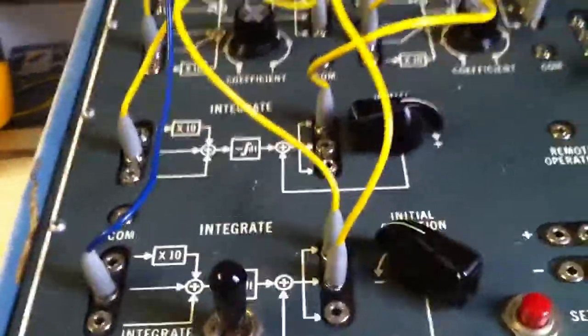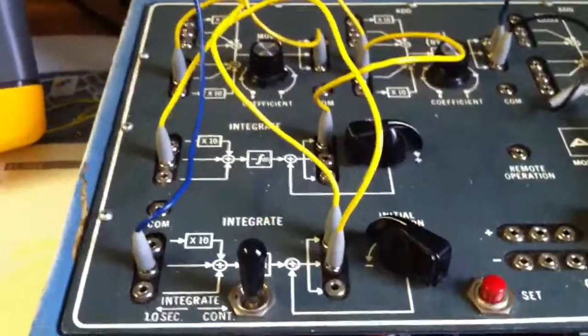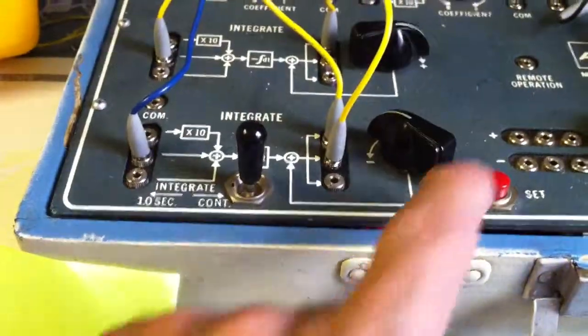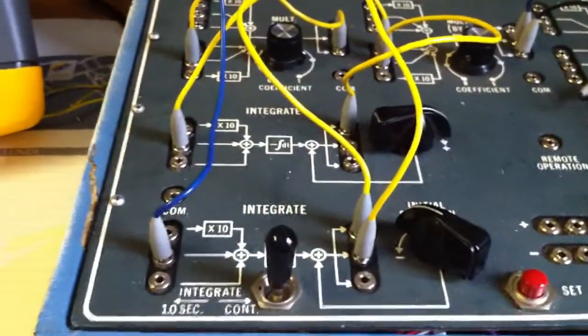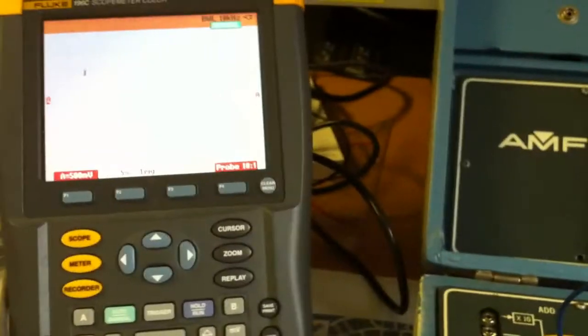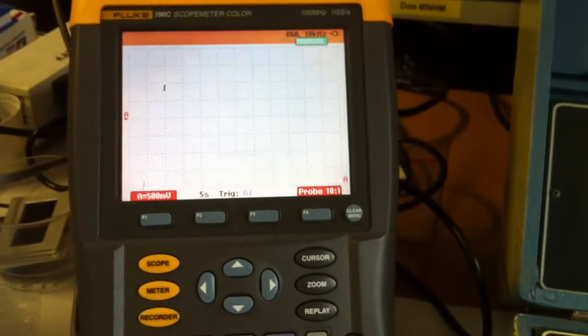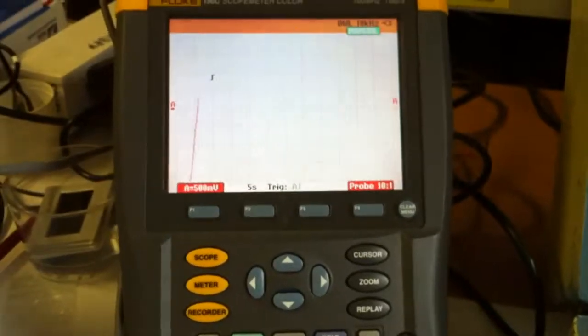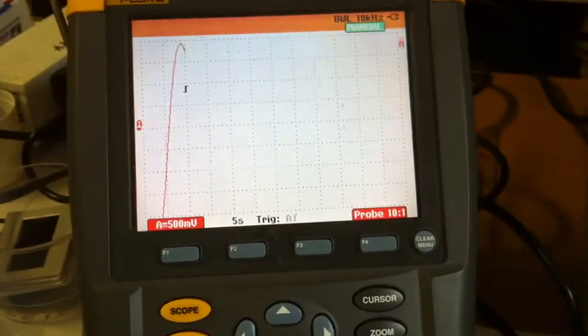Initial conditions are set by several potentiometers. We won't change them. Let's just initialize the machine. Launch the oscilloscope and launch the integrator. Now, you see that the output voltage is varying in time.